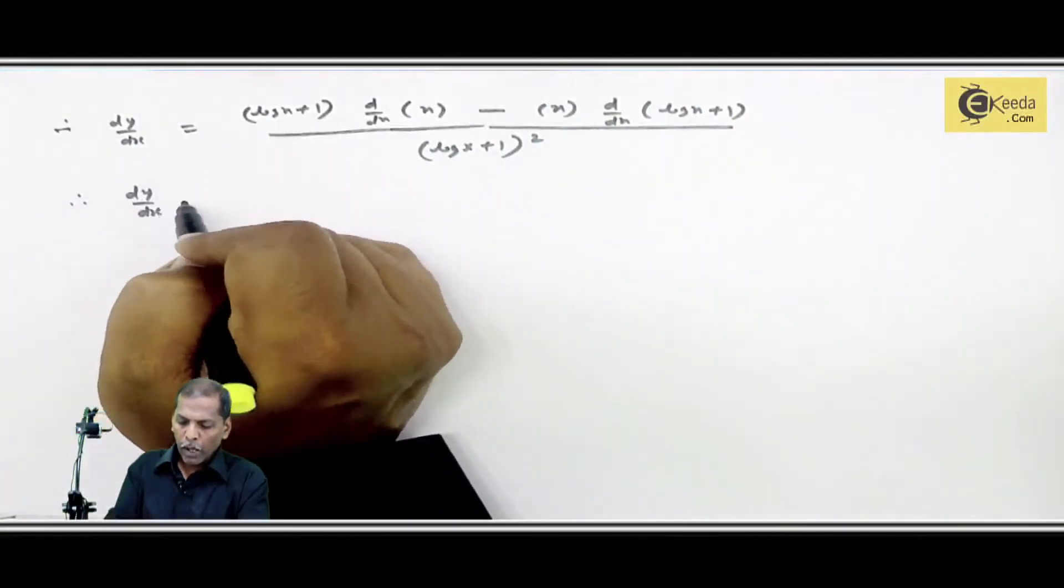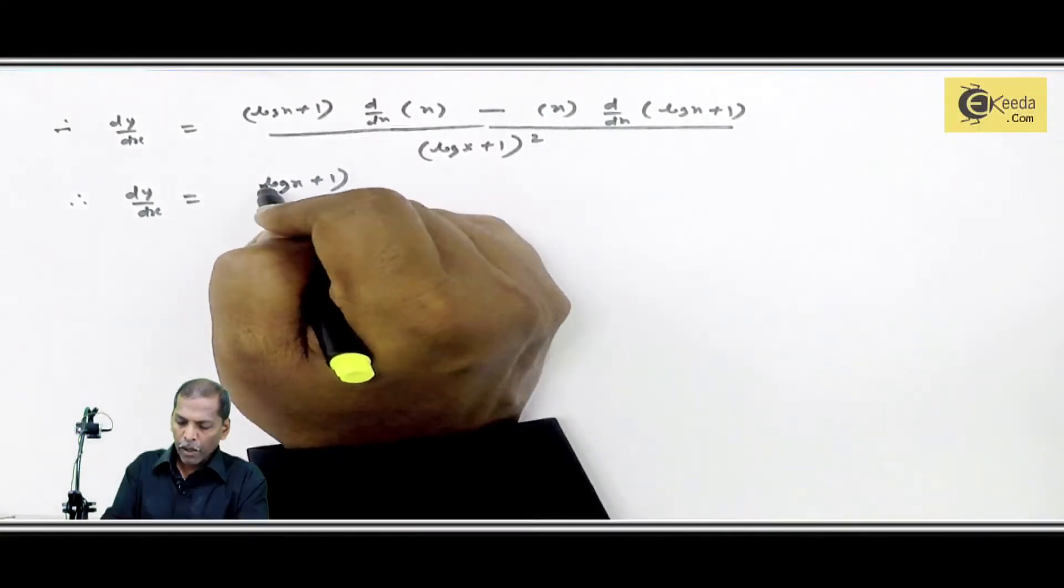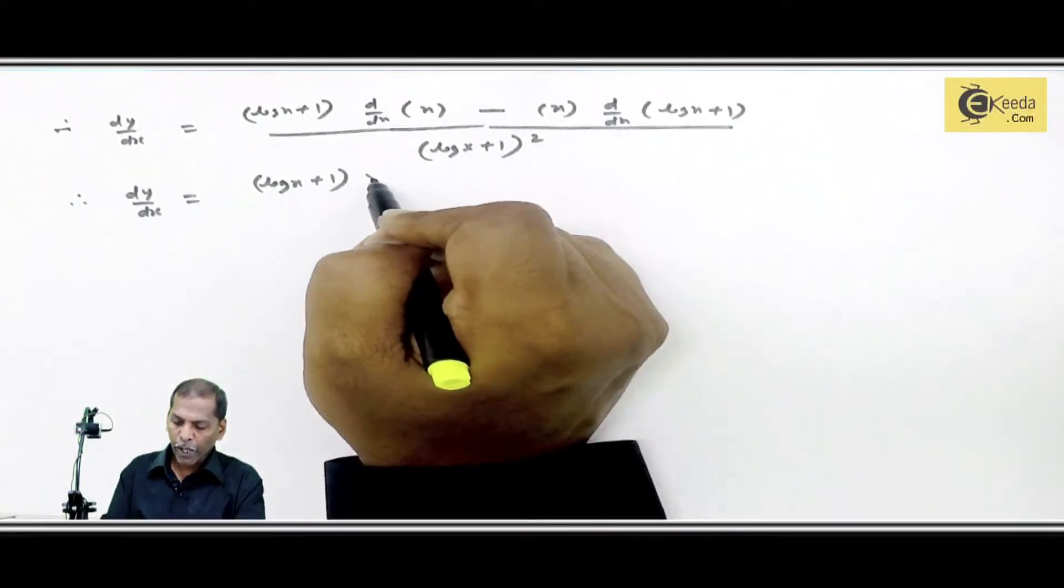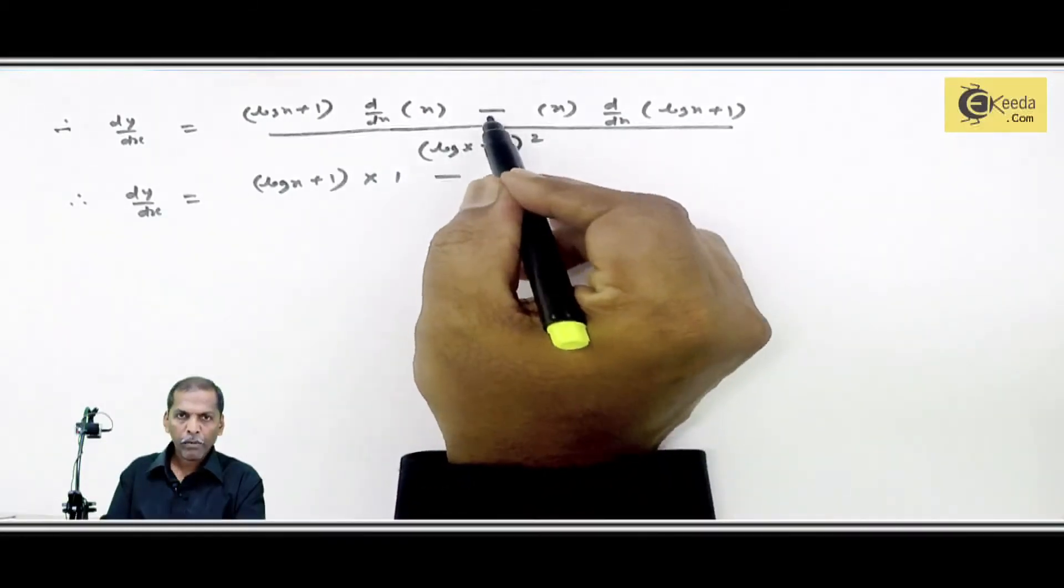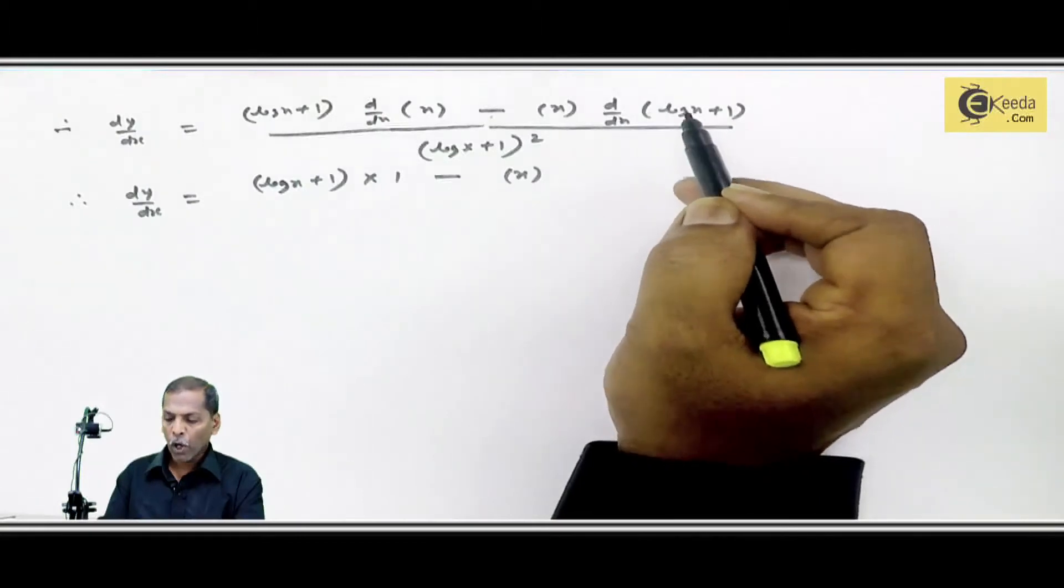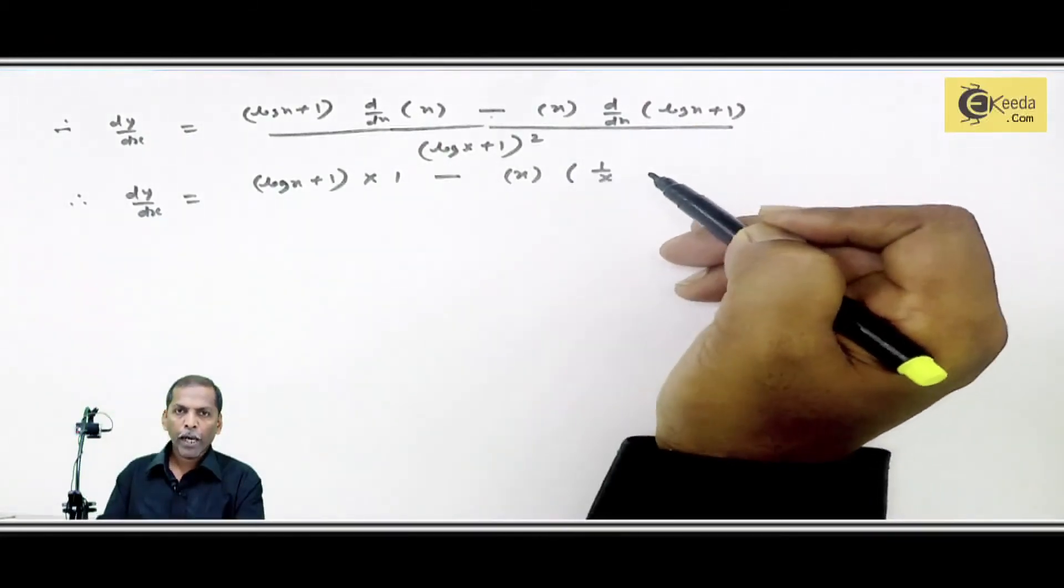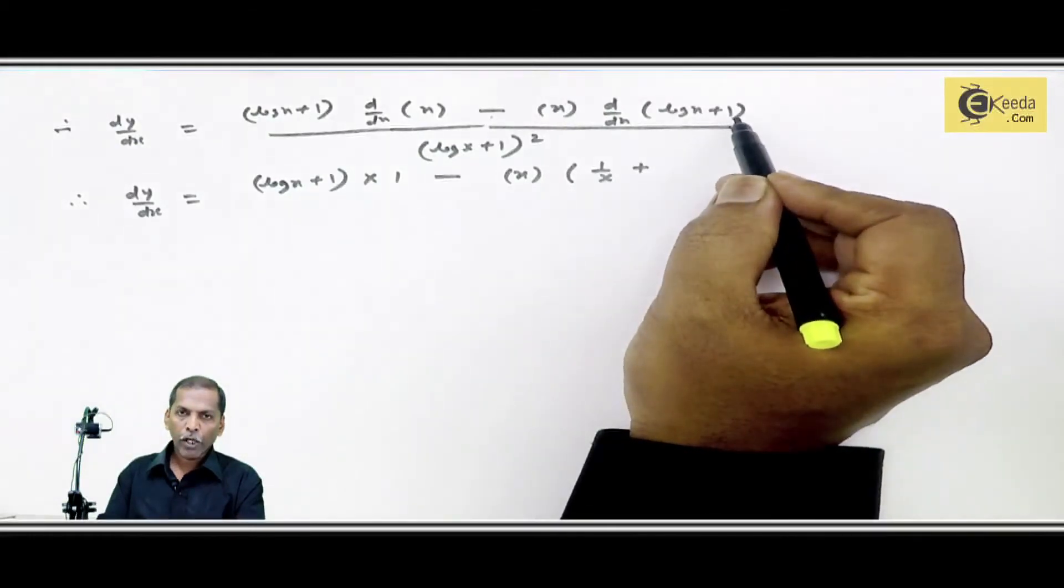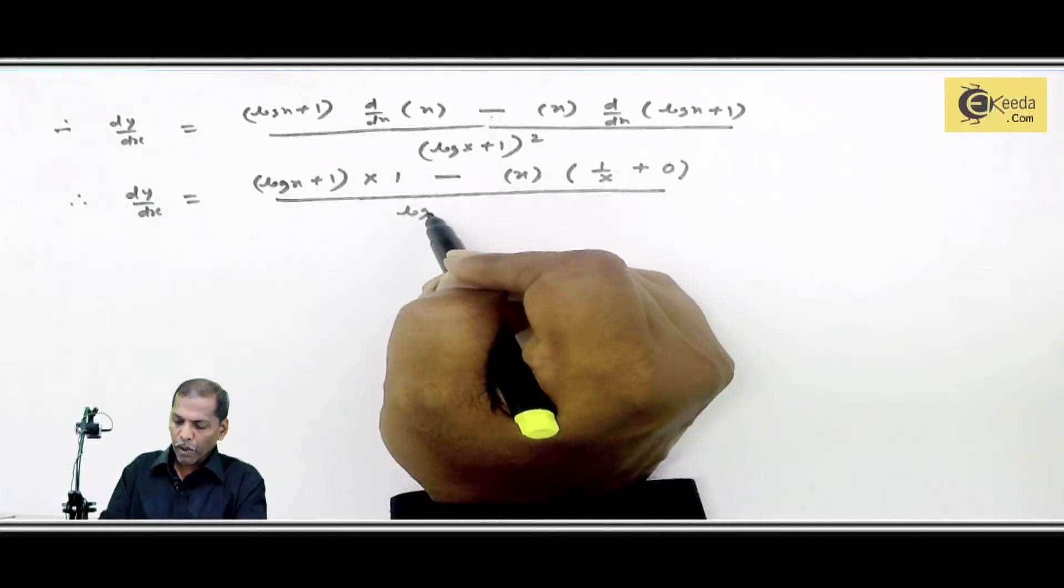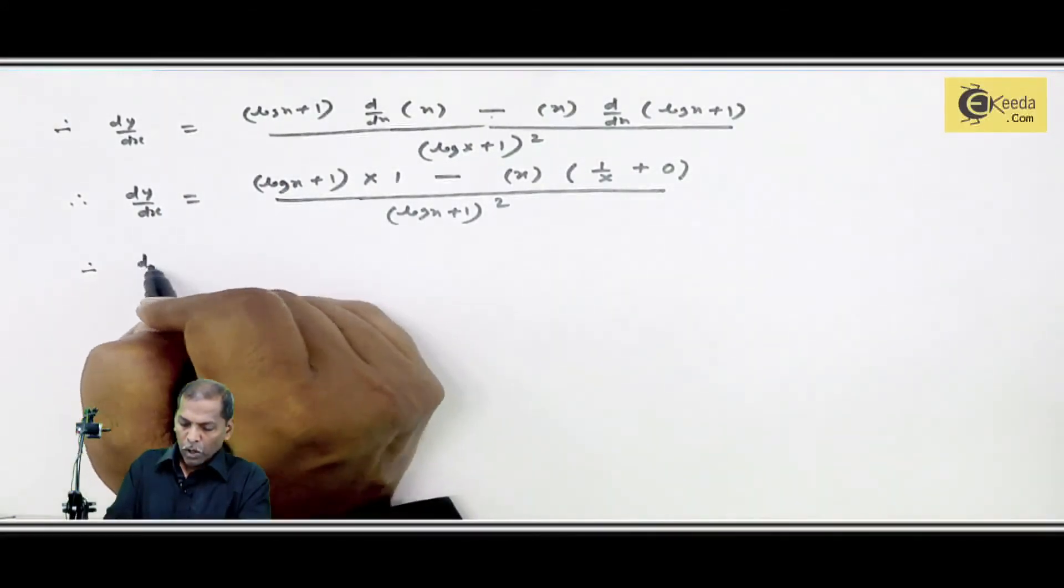Therefore, dy upon dx is equal to first bracket log x plus 1, we write as it is. Derivative of x, x derivative is 1. Then minus sign. The term x we write as it is. Then derivative of log x plus 1. Log x derivative by formula is 1 by x plus 1, constant term derivative is zero, upon log x plus 1 the whole square.